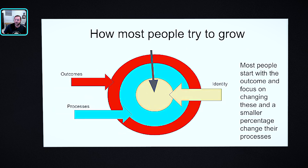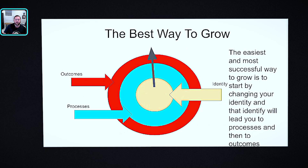How most people try to grow is they focus on their outcomes — wanting more patients, being a better injector, losing weight, running a marathon, writing a book. Then they try to go backwards to the process, and usually never do they get to the identity. The actual best way to grow and align yourself for success is the exact opposite of what most people do. Many times the exact opposite of what the majority of people are doing is actually the path to success. The best way to grow is to start with your identity.